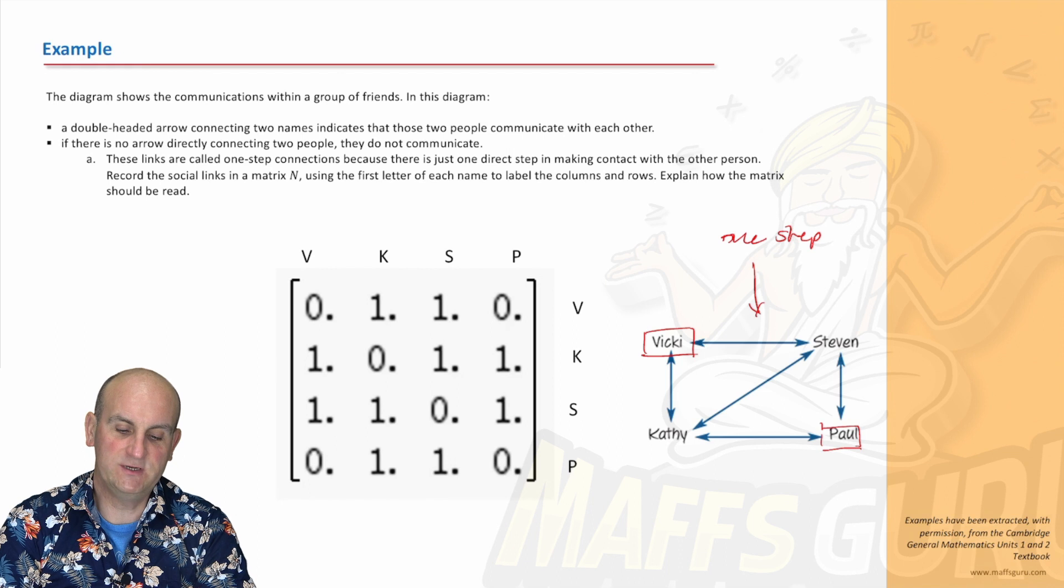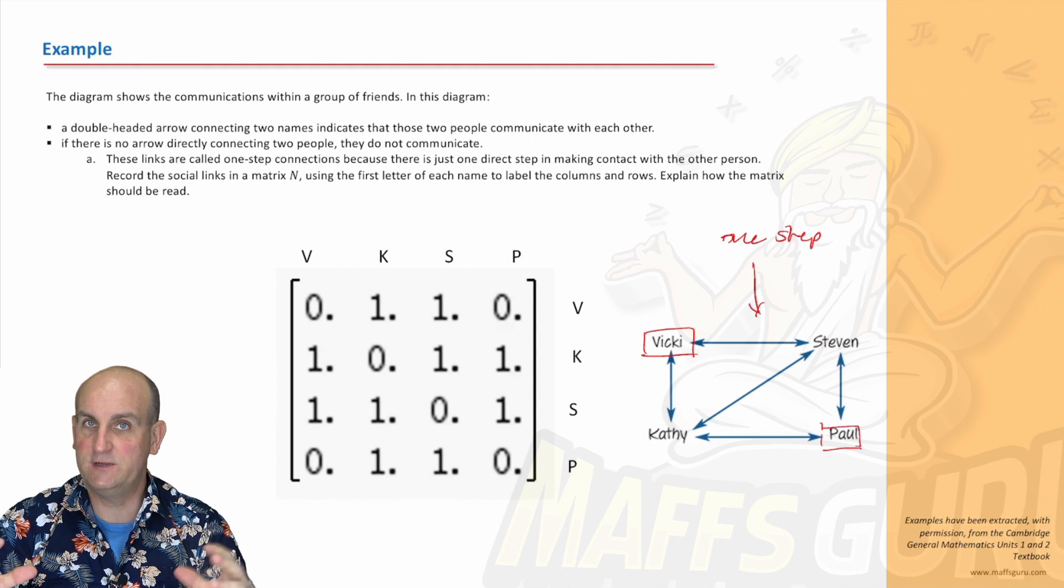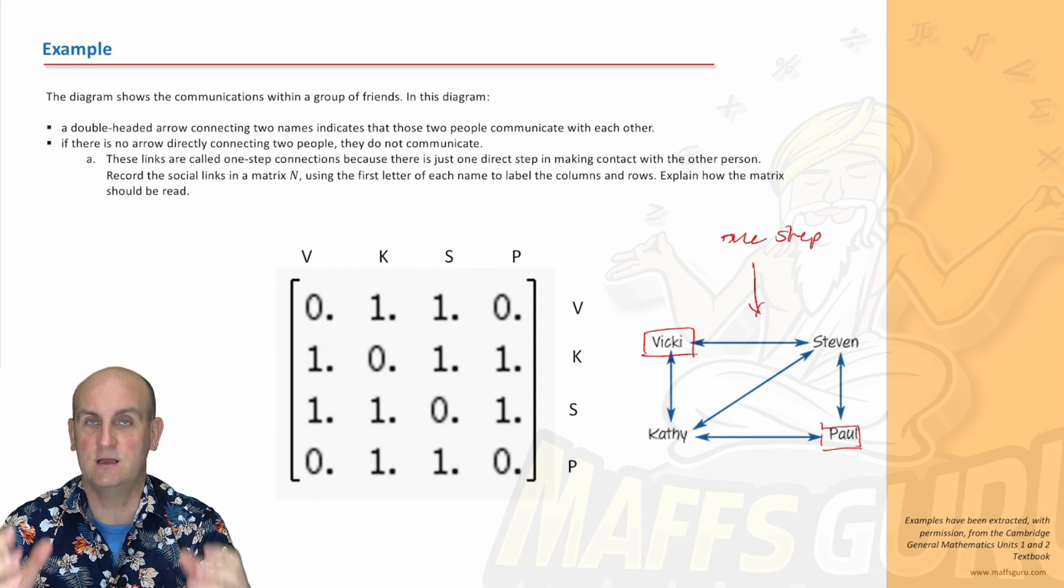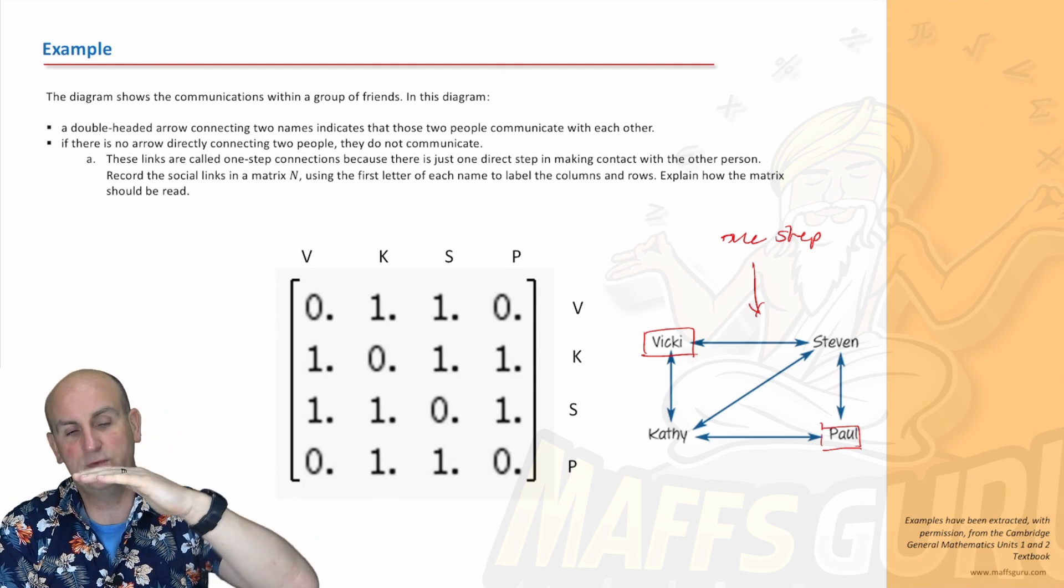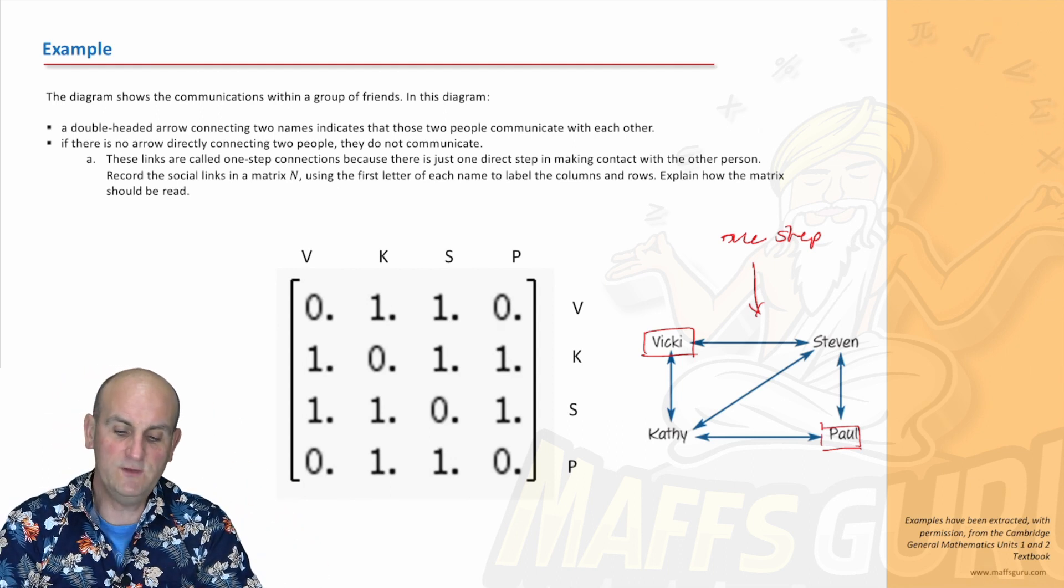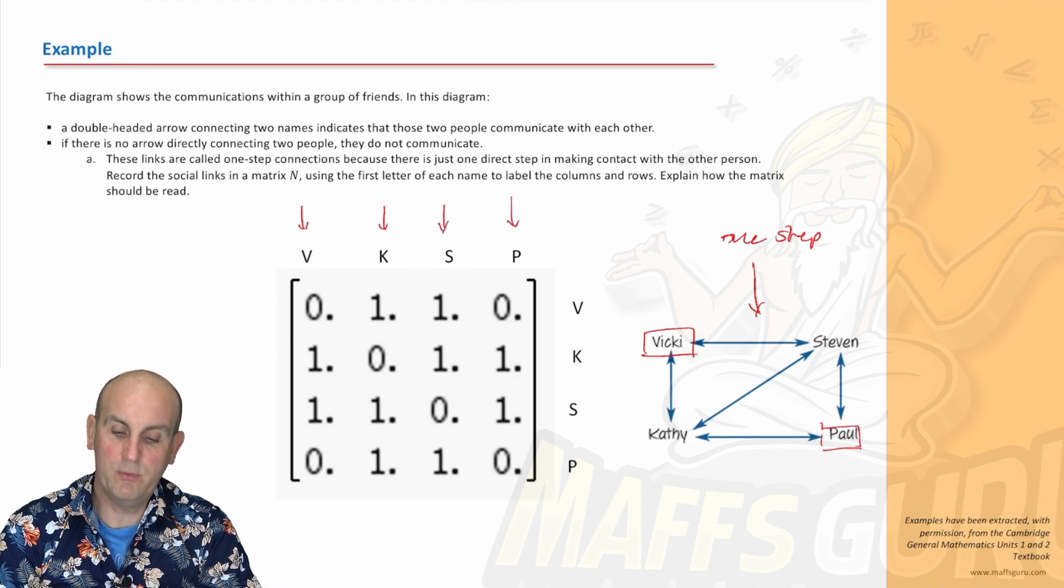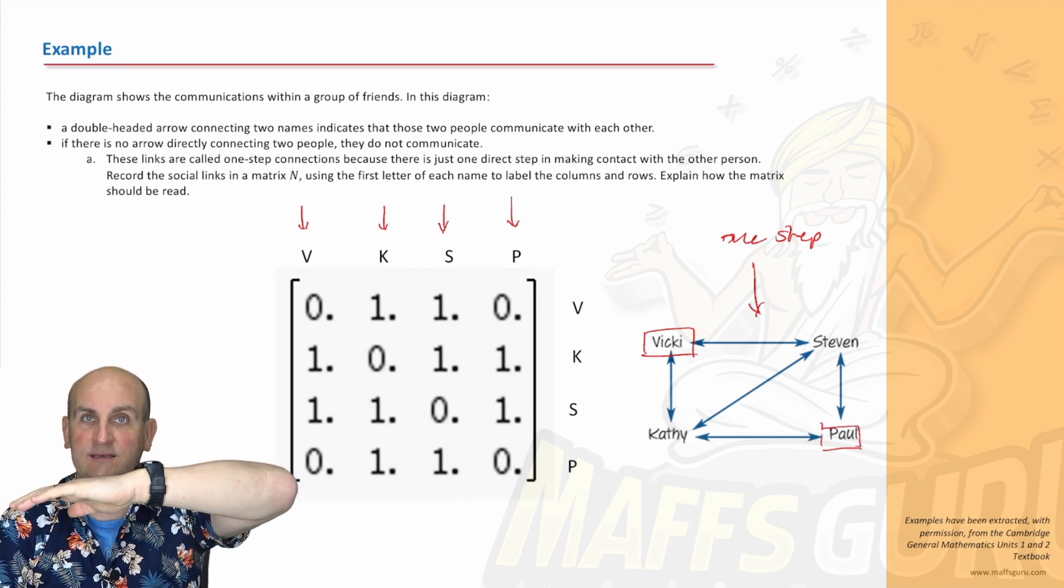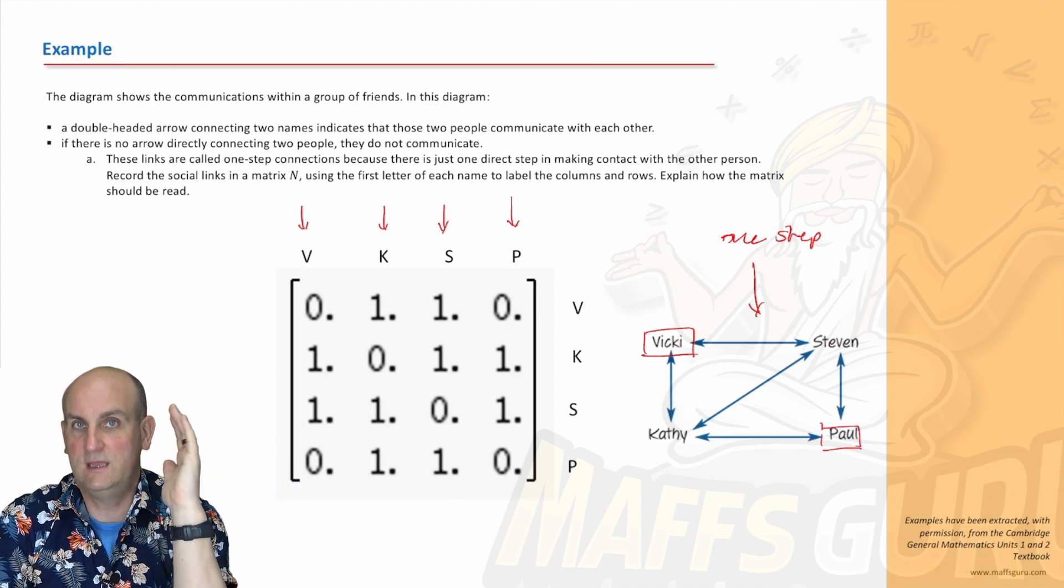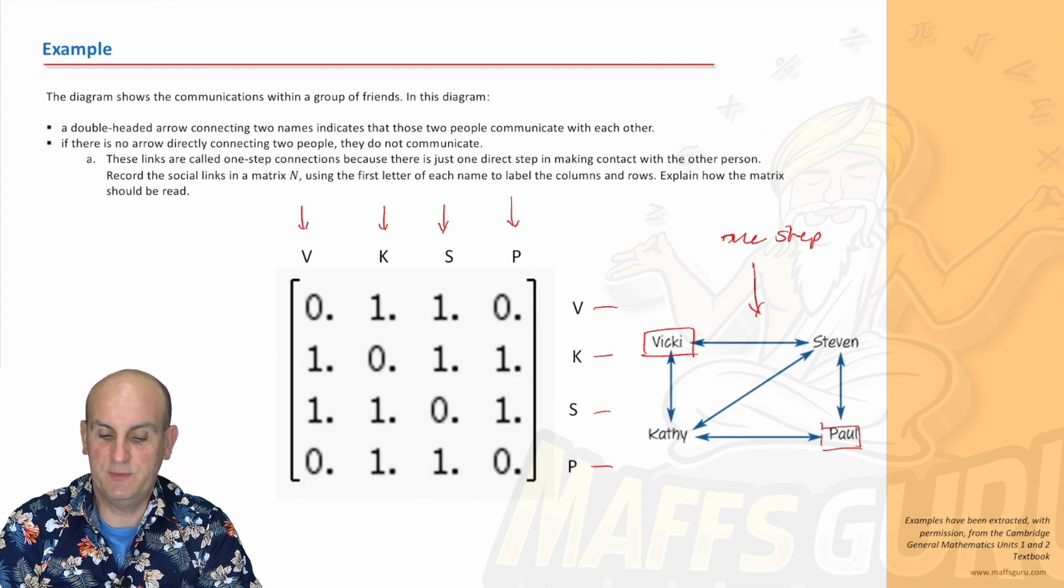Record the social links in a matrix N using the first letter of each name to label the columns and rows. When we have matrices, each row stands for something, each column stands for something. I've decided to have the first row stand for Vicky, then Kathy, Stephen, and Paul. Generally speaking, the order we have the letters in on the columns, we keep for the rows.